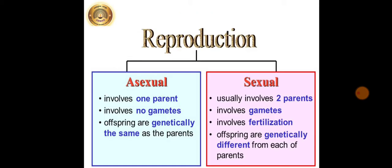You already know that there are basically two modes of reproduction, asexual and sexual. We have already seen what is meant by asexual mode of reproduction. So, now what is meant by sexual reproduction? It involves two parents. It also involves the formation of gametes, fertilization process. And offsprings are genetically different from each parent. Let's see all these things in detail.